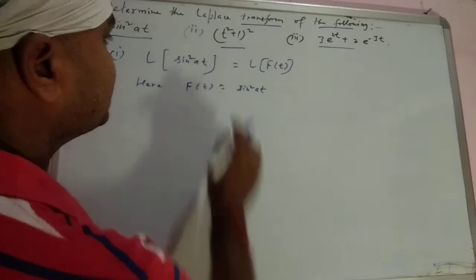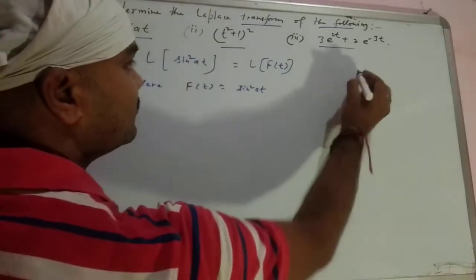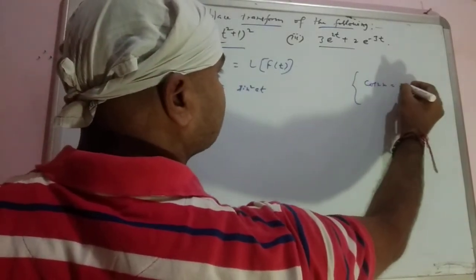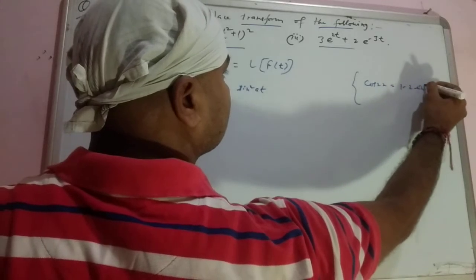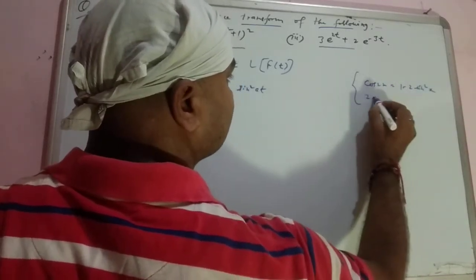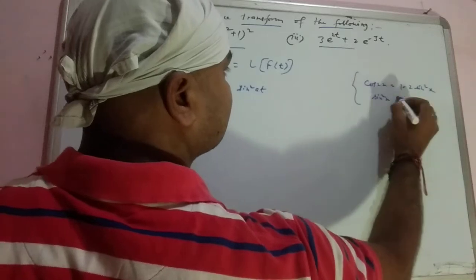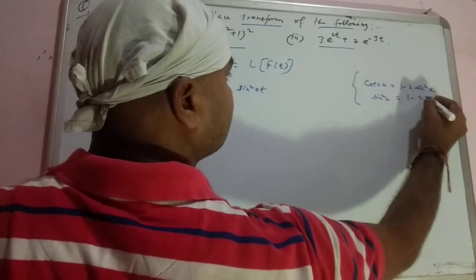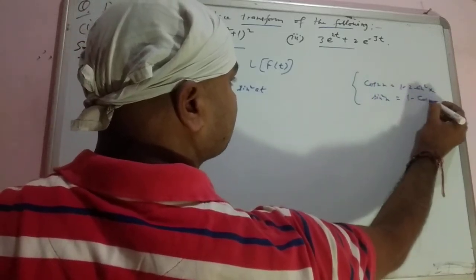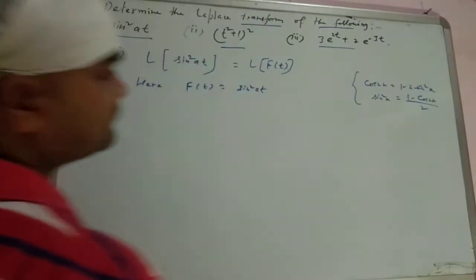We don't use the direct formula; instead we use the trigonometric identity. We know that cos 2x equals 1 minus 2 sine square x, so sine square x equals 1 minus cos 2x upon 2.